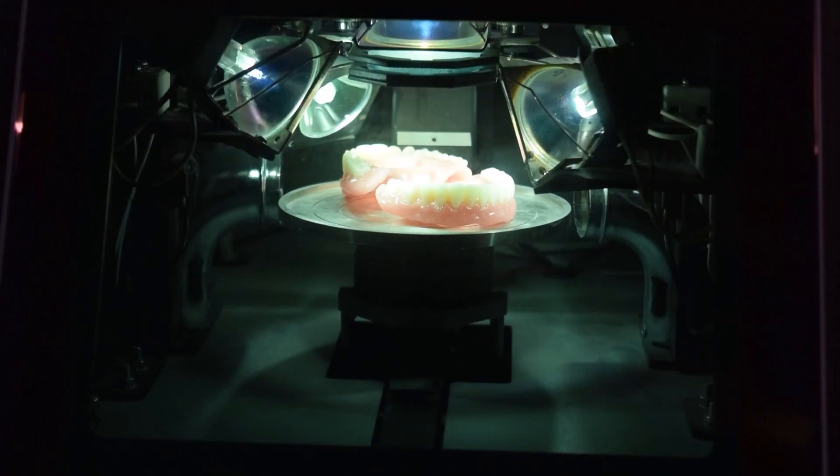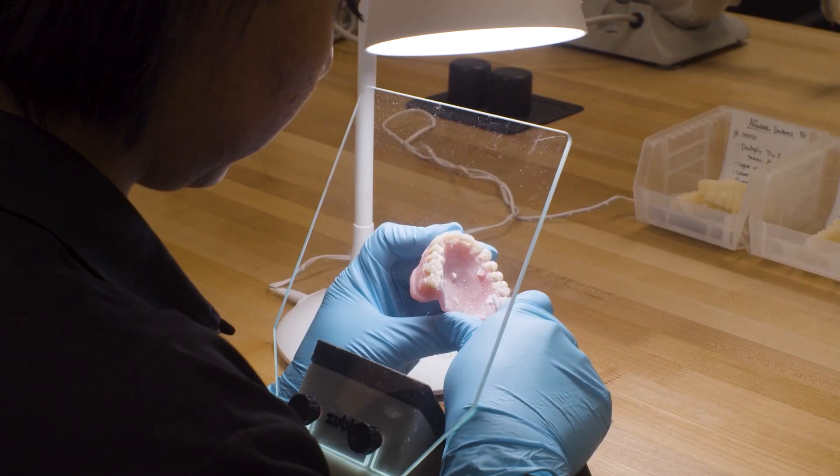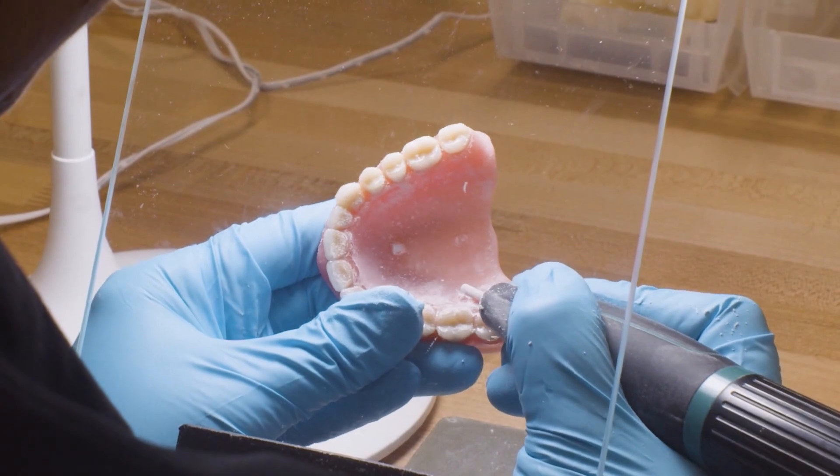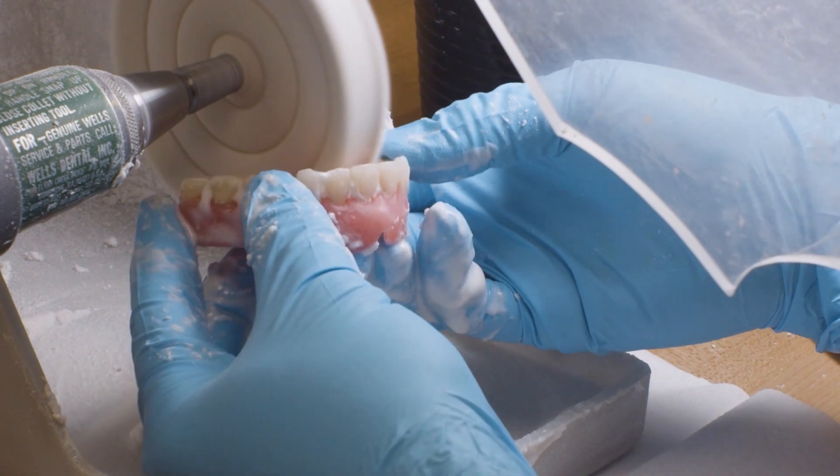Once the teeth are placed, the denture is placed in a UV oven for final curing. The UV light activates the photosensitive resin material causing it to shrink down, harden, and bind the denture teeth in place leading to a long-lasting secure single unit.